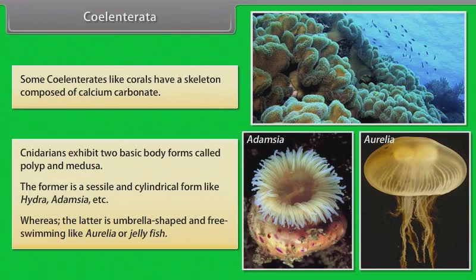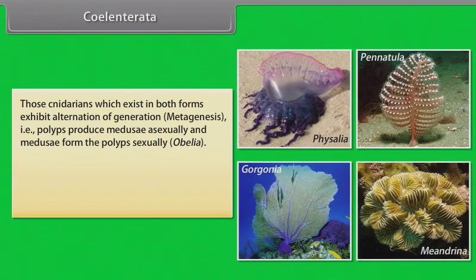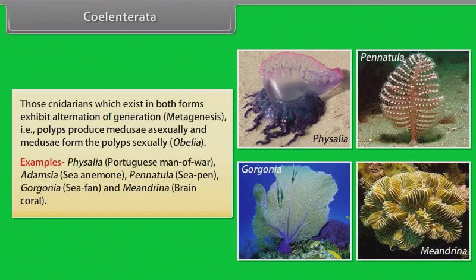Those Cnidarians which exist in both forms exhibit alternation of generation, known as metagenesis — polyps produce medusae asexually and medusae form polyps sexually. Example: Obelia. Examples of Coelenterata include Physalia (Portuguese man-of-war), Adamsia (sea anemone), Pennatula (sea pen), Gorgonia (sea fan), and Meandrina (brain coral).